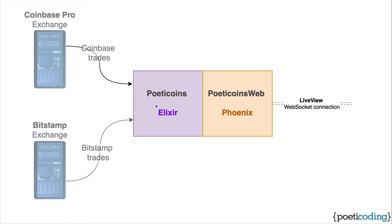Our application is actually made of two parts: the Poetic Coins core functionalities and the Phoenix web part. Once we've built the core functionalities, the Live View part will heavily rely on them.